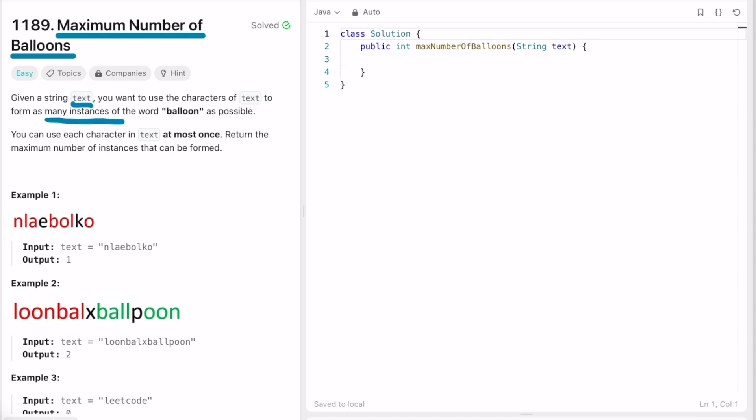We have to count the number of instances for the word balloon. We have to check the characters present inside text and using those characters how many times you can form the word balloon. You can use each character at most once while calculating the output.